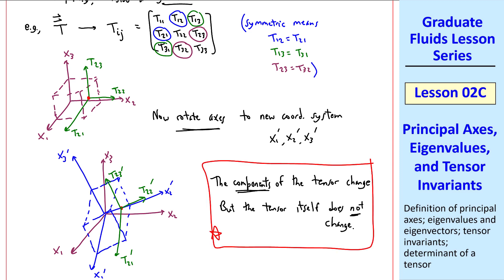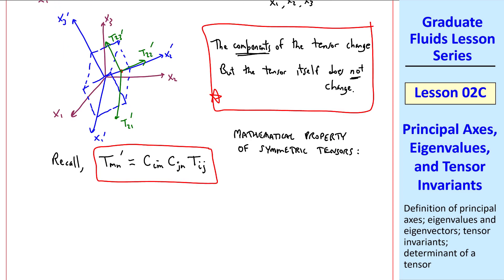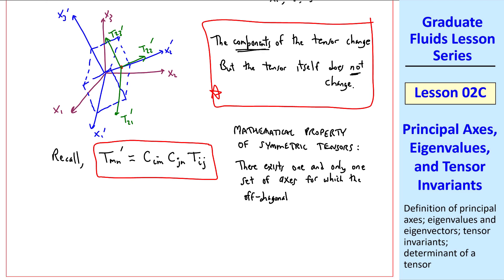We're just using a different coordinate system to describe this tensor. We recall from a previous lesson, the components in this new coordinate system are related by the cosine matrices, CIM and CJN, in tensor notation. Here's a mathematical property of symmetric tensors. There exists one and only one set of axes for which the off-diagonal components are zero. This is an important mathematical property. And this set of axes are the principal axes.